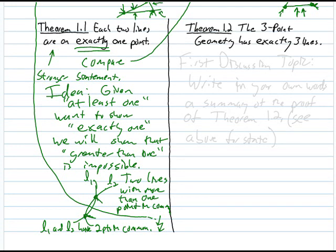Since we agreed that axioms 1 through 4 define our geometry, assuming more than one shared point leads to a contradiction with axiom 2. Therefore, it cannot be true that two lines share more than one point — there must be exactly one point of intersection between any two lines.